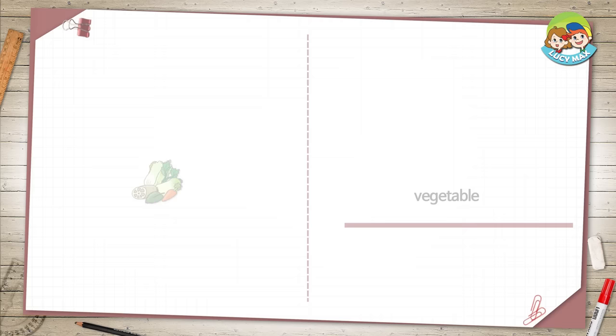Vegetable. It is a healthy food that grows outside. You see many vegetables in the picture. A carrot is one of them. What are the names of the other vegetables?